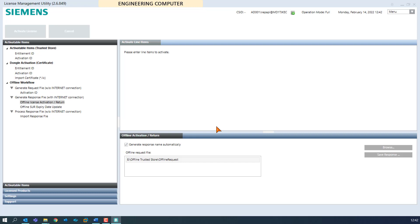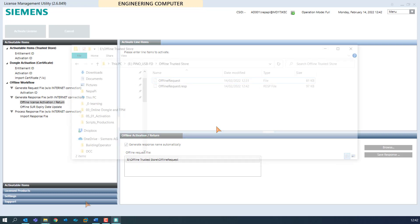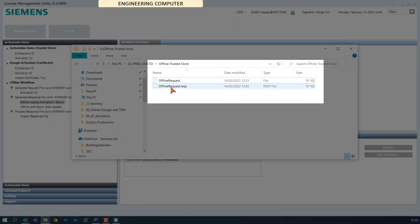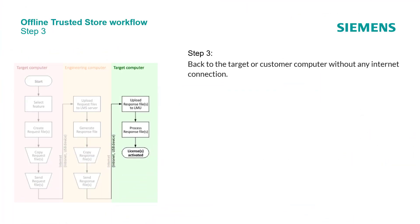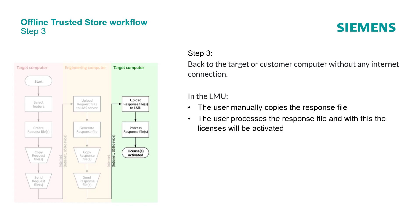The new response file has been created successfully. Now make sure that this file will be available at the target or customer computer. In Step 3, back to the target or customer computer without any internet connection. In the LMU, the user manually copies the response file and processes it, and with this the licenses will be activated.